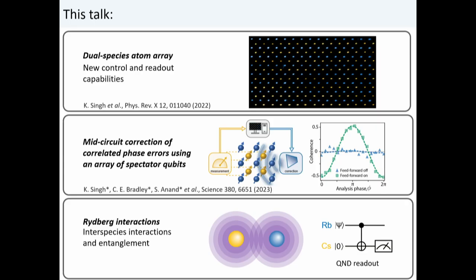That brings me to the outline of my talk. First, I'll discuss our two-species atom array and how it addresses many of these challenges. Then I'll discuss mid-circuit operations and how we can perform mid-circuit measurements on one element to perform feedback operations on the other. Lastly, I'll discuss Rydberg interactions and our first results on creating inter-species interactions between rubidium and cesium.